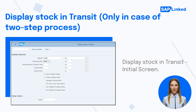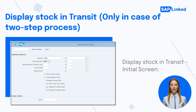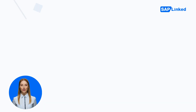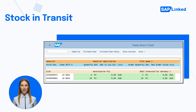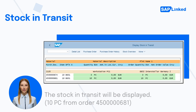Go to T-Code MB5T, enter the material number and receiving plant, and if required fill in the other data. The stock in transit will be displayed, as shown here.